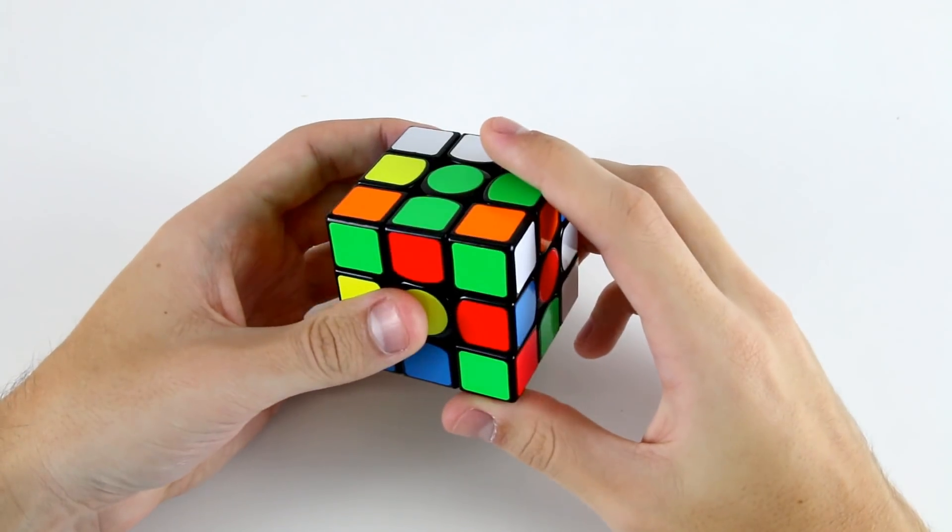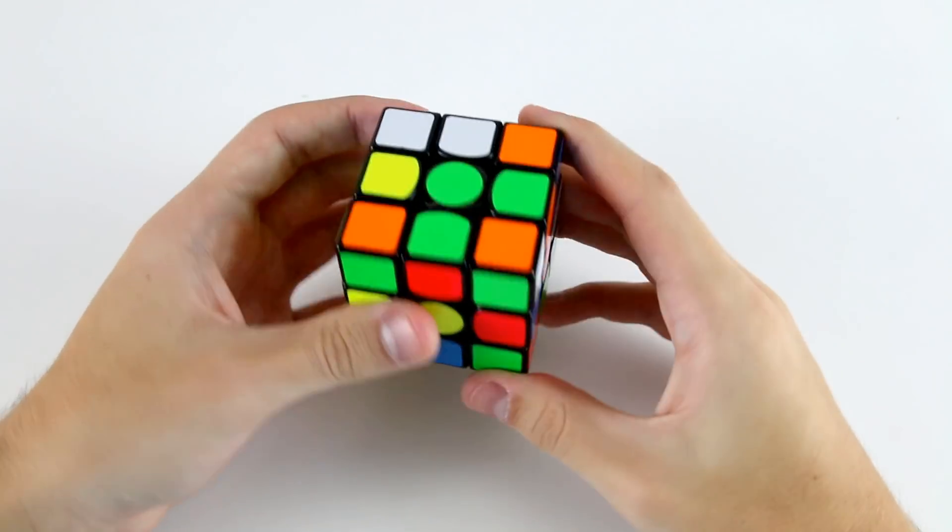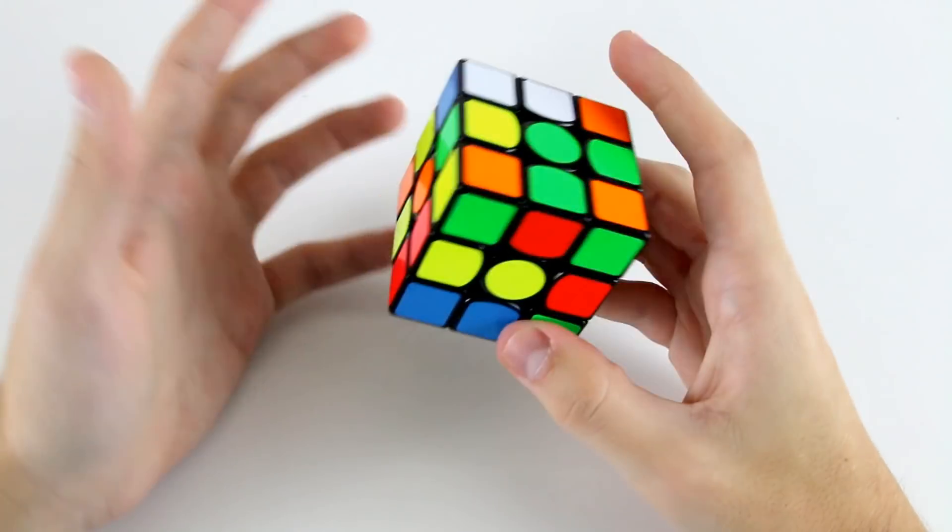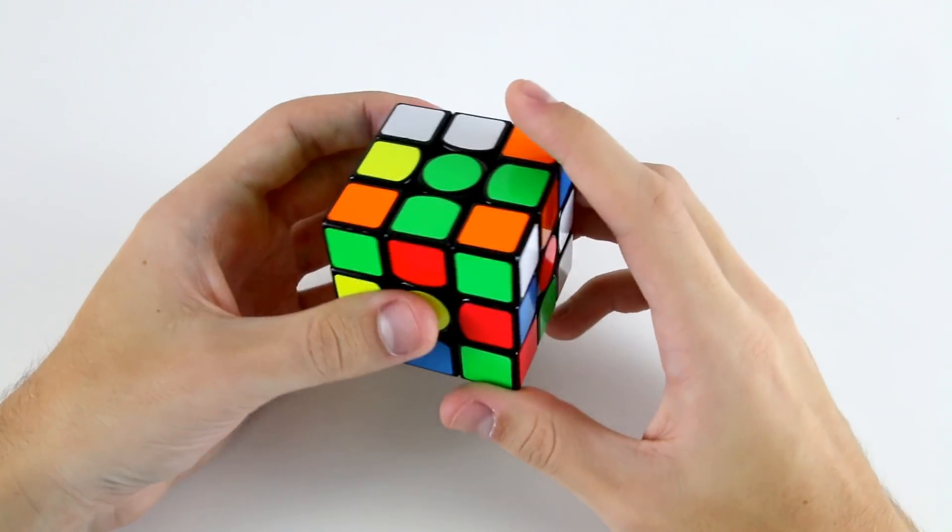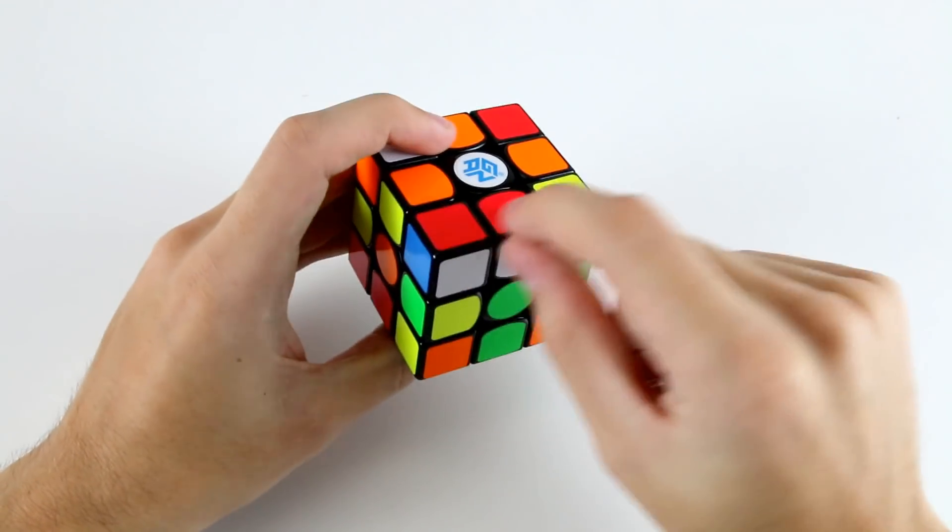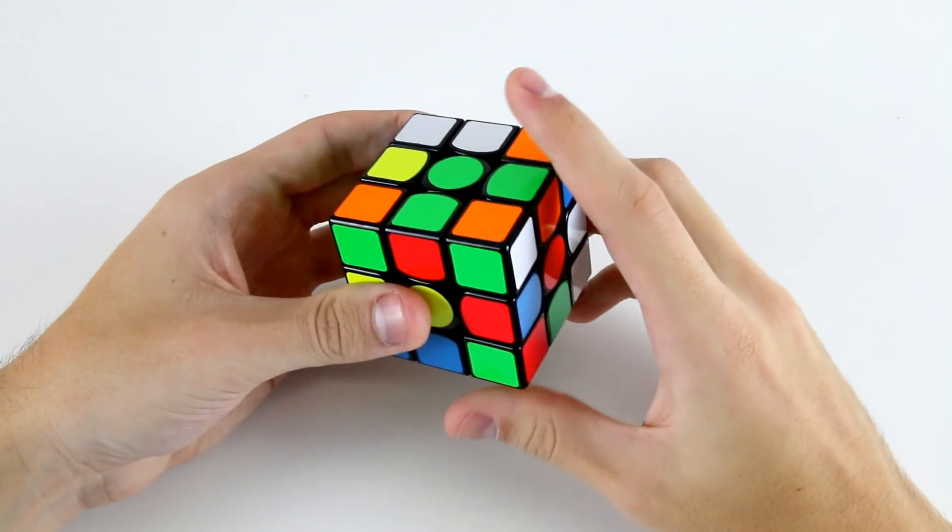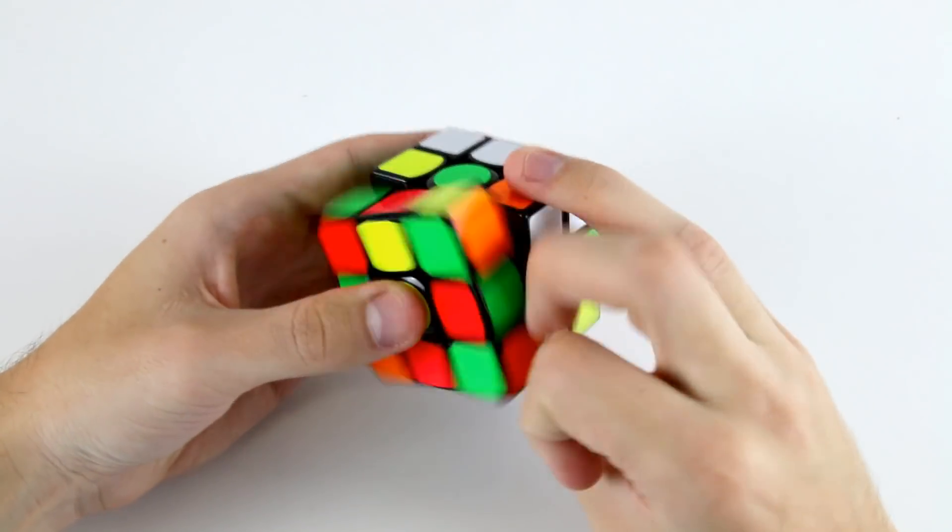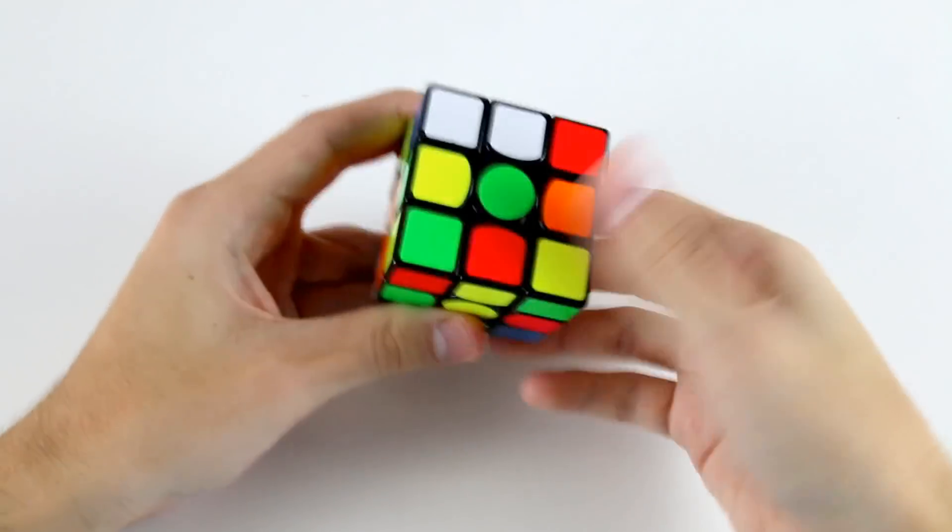I can do something like f', r', f2, and even though that's a little bit annoying in terms of the finger tricks that we need to use, it'll pay off because then I won't need to rotate to insert this pair. So I can go f', r', f2, d, and then insert this one there.